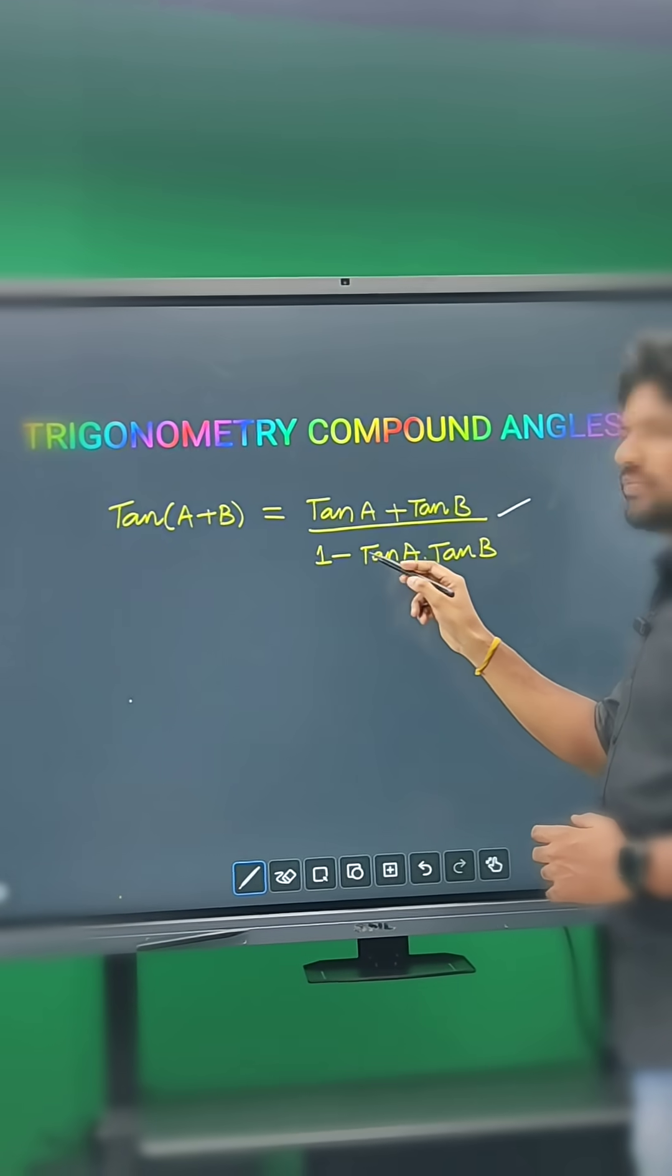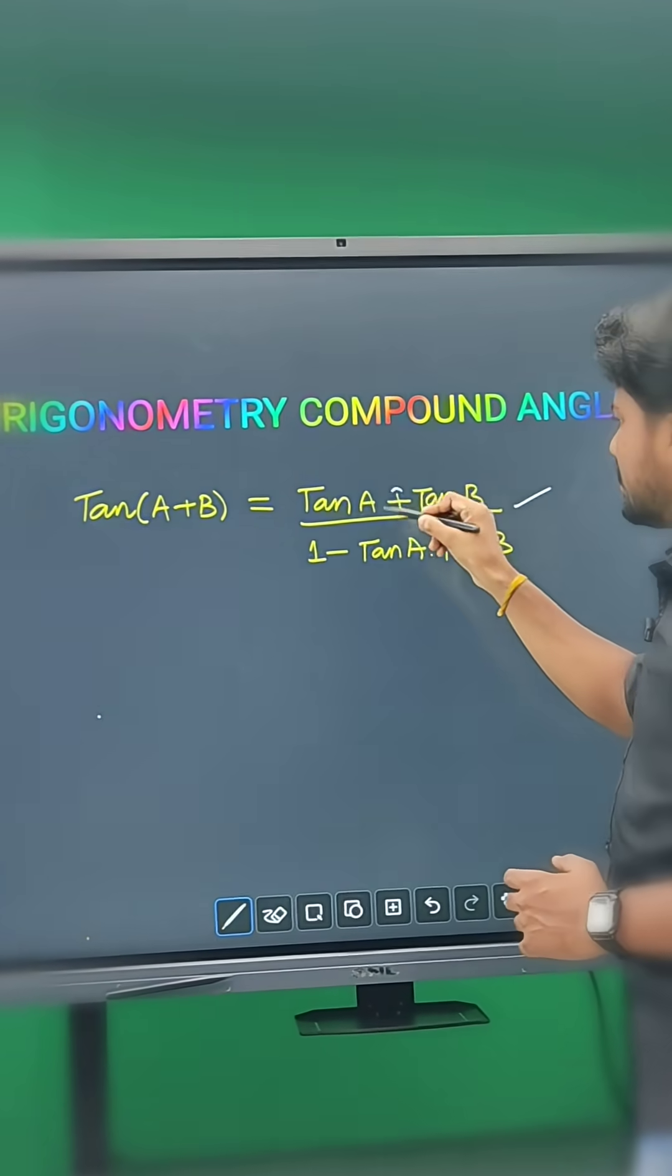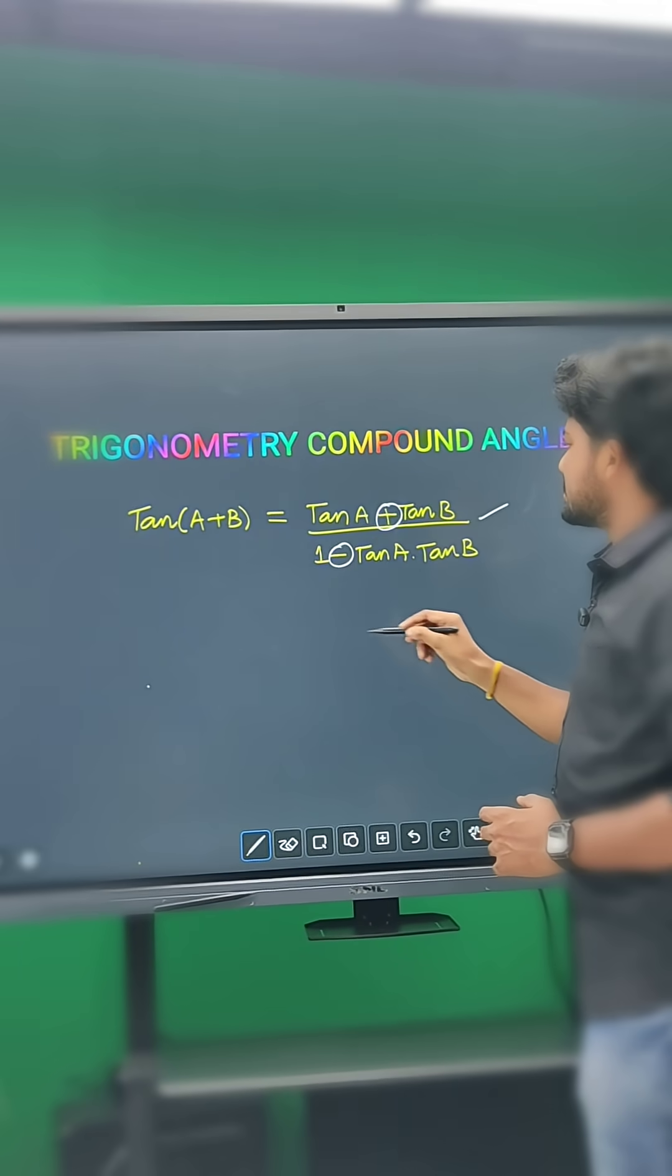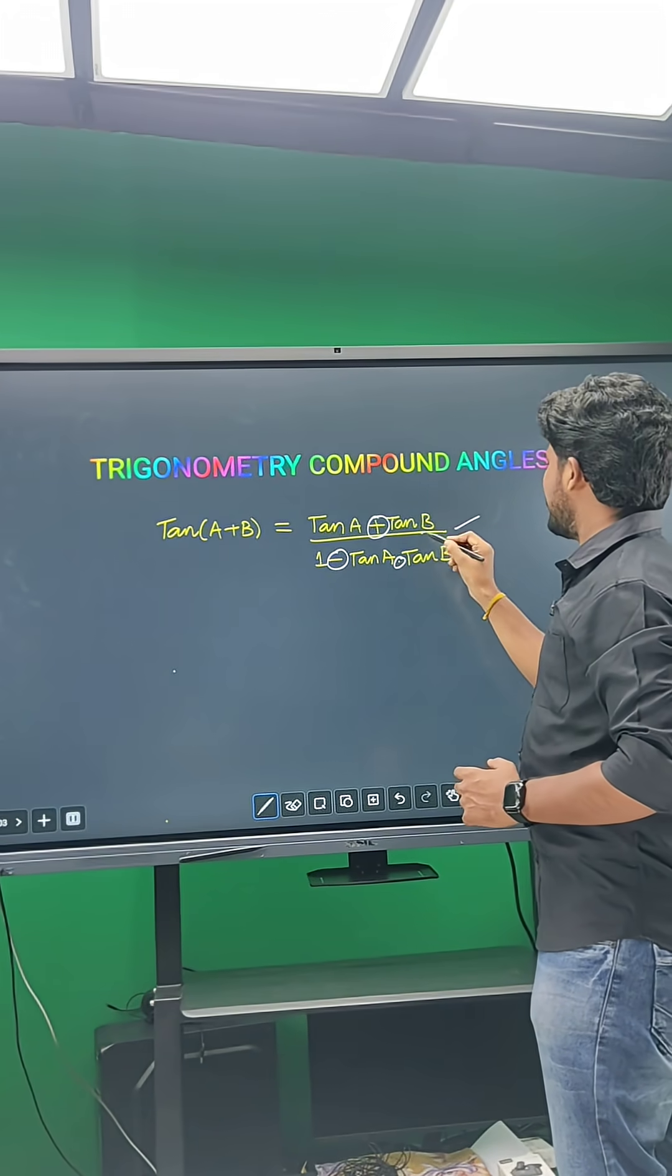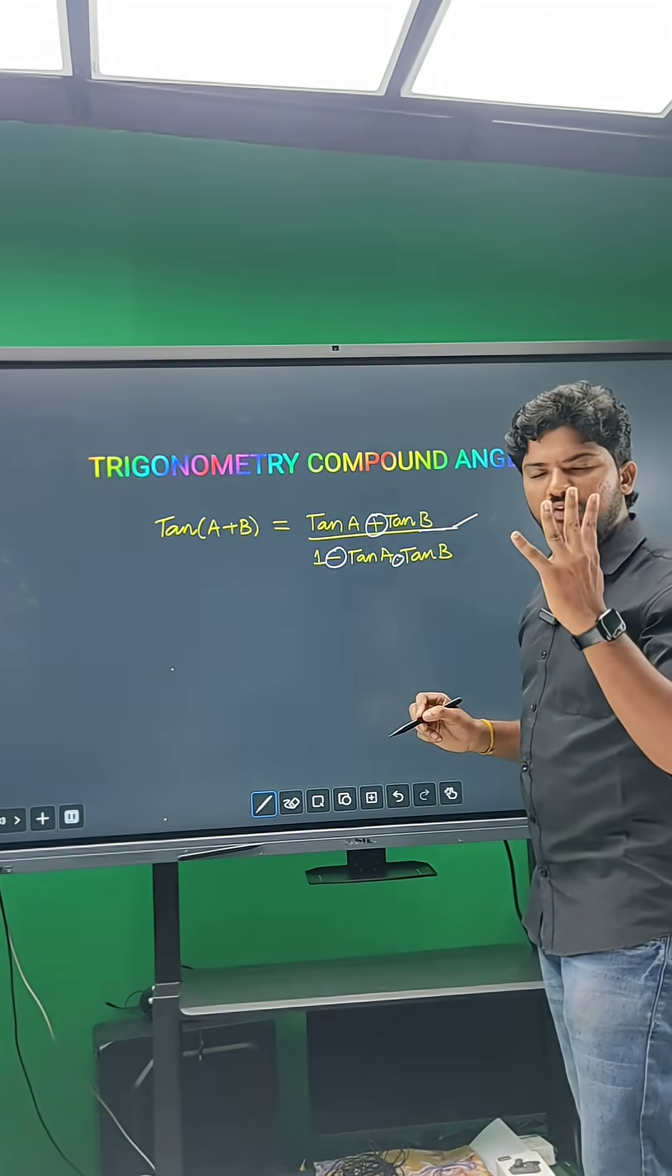A plus B is equal to tan A plus tan B by 1 minus tan A tan B. Here, addition, subtraction, multiplication, and division—in one formula we have four arithmetic operations. Done. Now wait, wait, sir, you said only